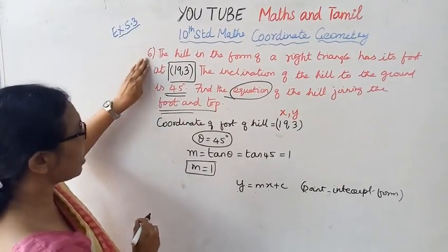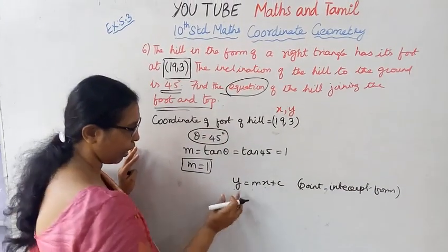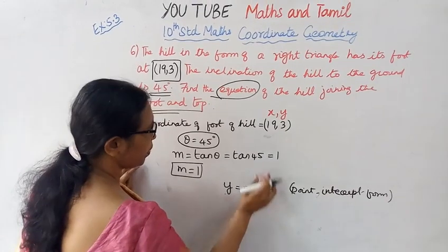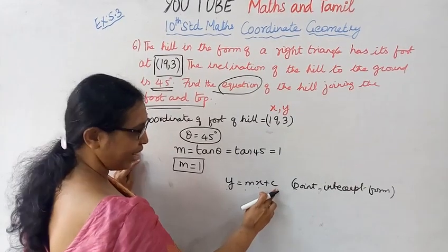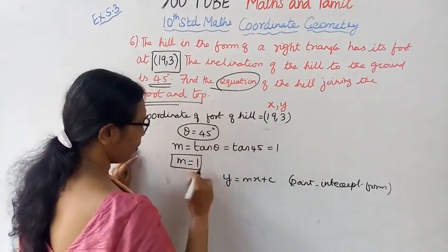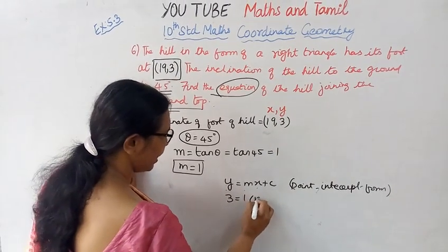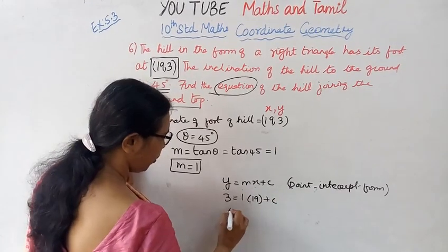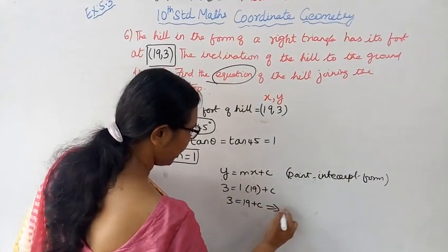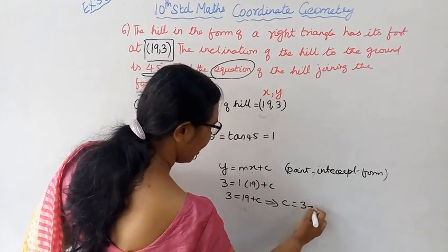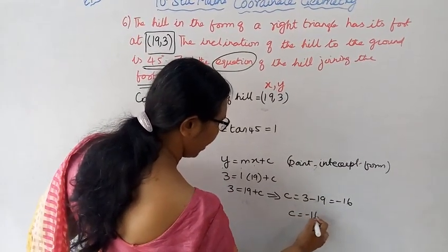The equation is Y equal to Mx plus C. Y equal to 3, M equal to 1, X equal to 19. So 3 equal to 19 plus C. That implies C equal to 3 minus 19. That is equal to minus 16. So C is equal to minus 16.